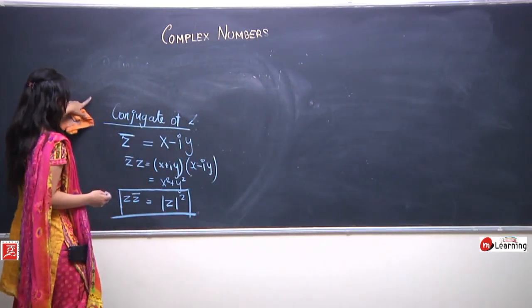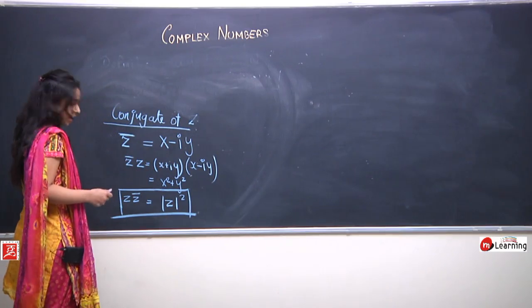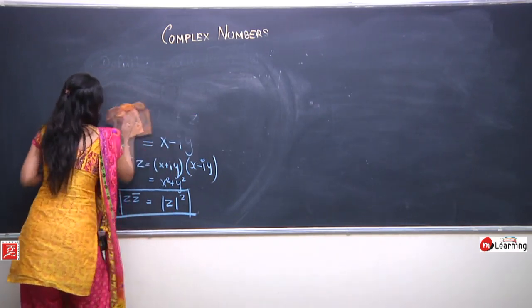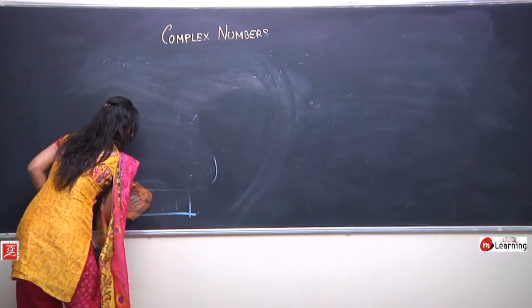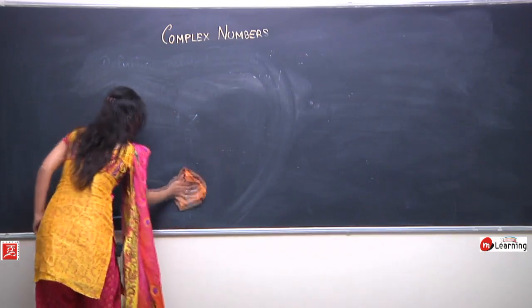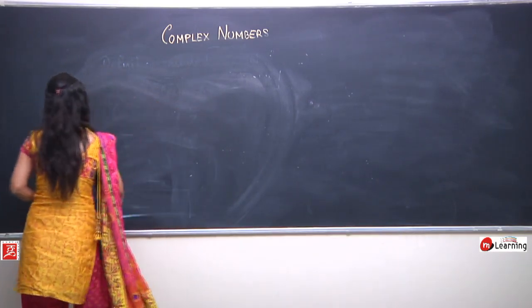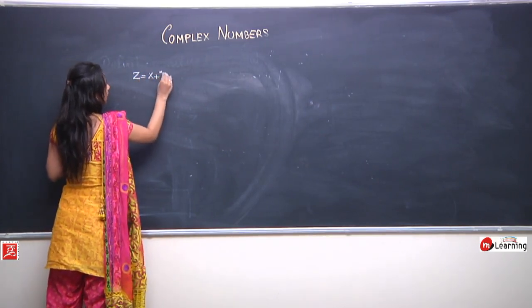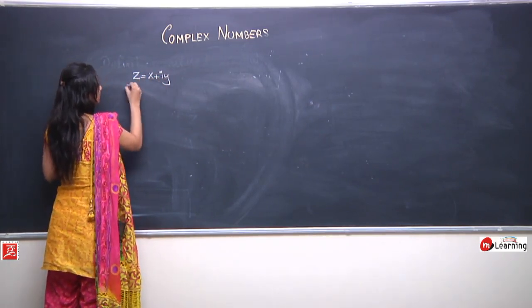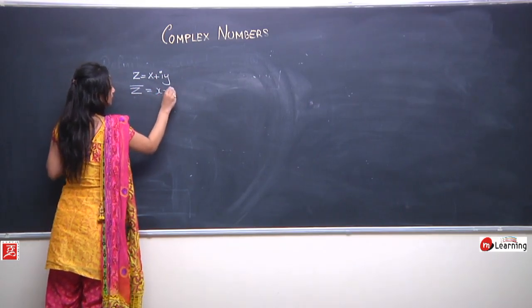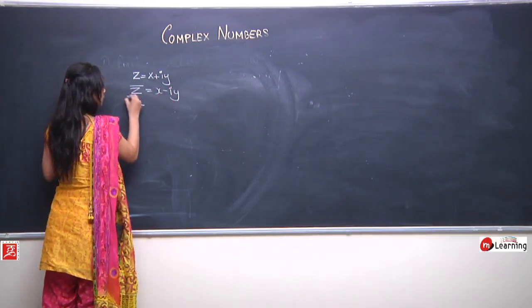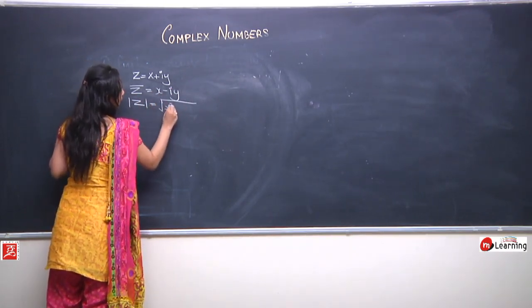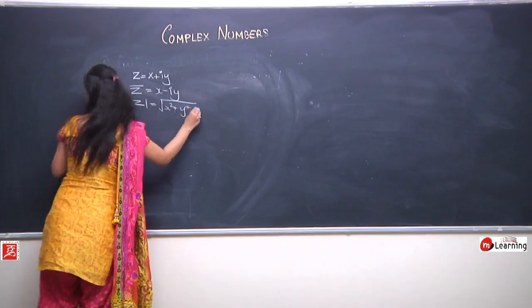One more thing — let us see how we can represent z and z̄ on the Argand plane. We know z = x + iy, z̄ = x − iy, and |z| = √(x² + y²).